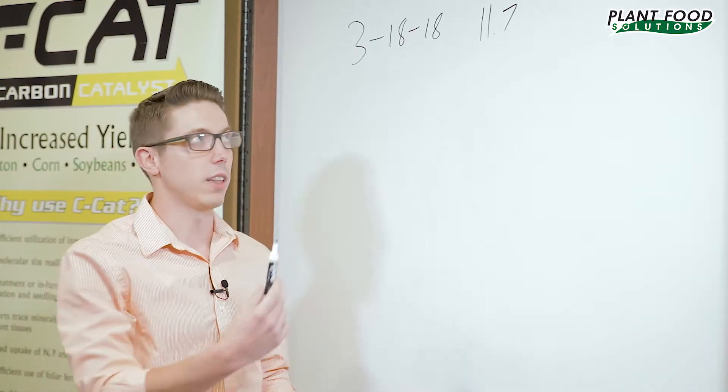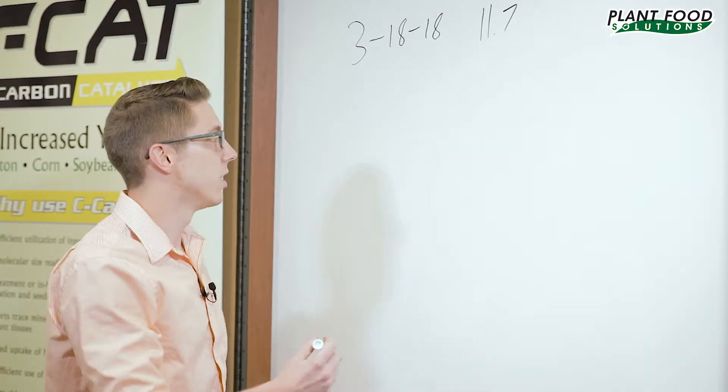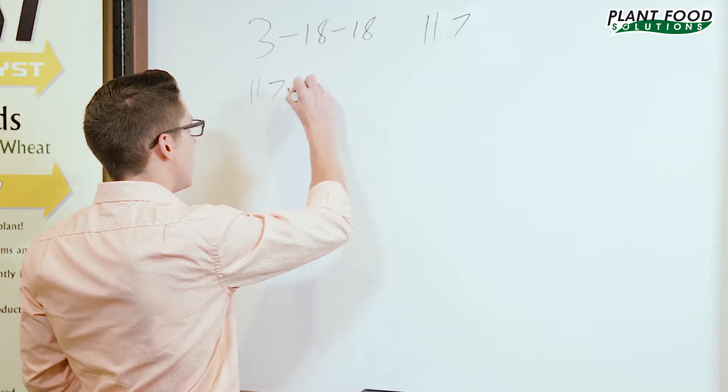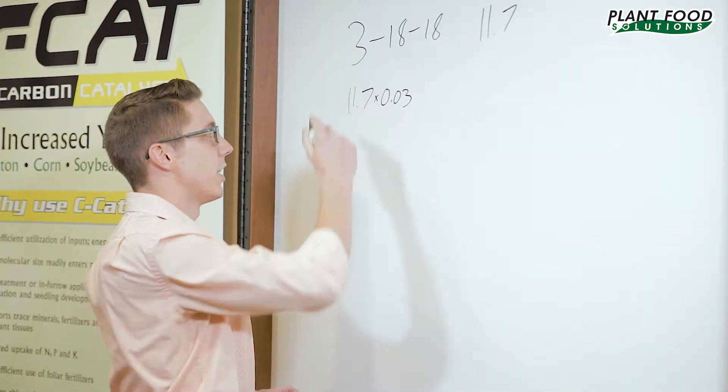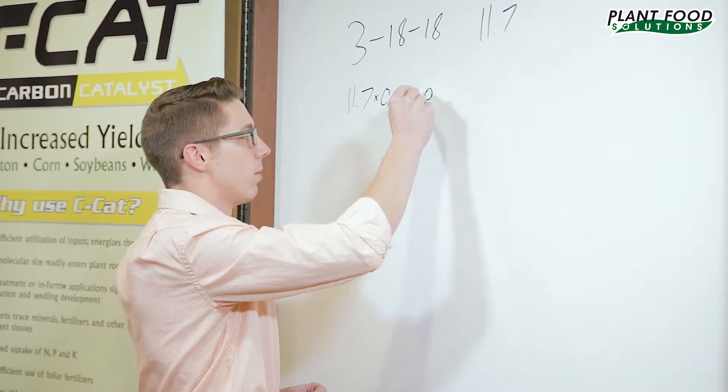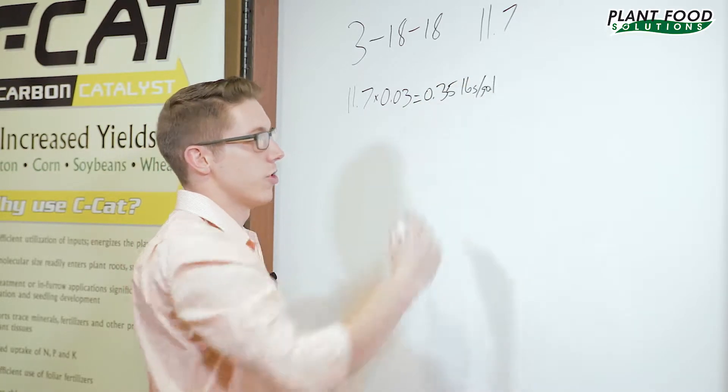So to find that out we're going to take the weight per gallon and multiply that by the percentages. So you're going to take 11.7 times 0.03 since 3 is a percentage. That's going to give you 0.35 pounds per gallon of nitrogen.